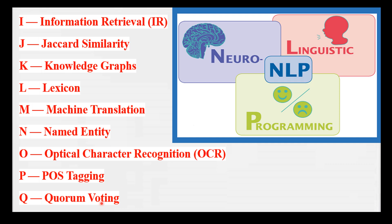Q is for ensemble voting, which combines predictions from multiple models to make a final prediction. Imagine a group of friends discussing and deciding on a restaurant choice based on their individual preferences.